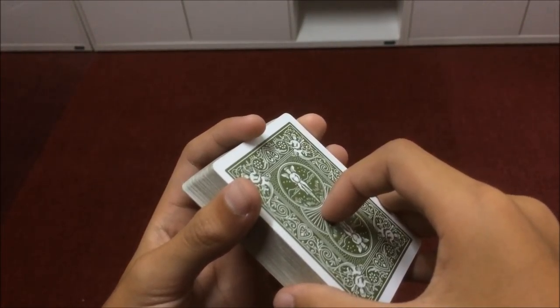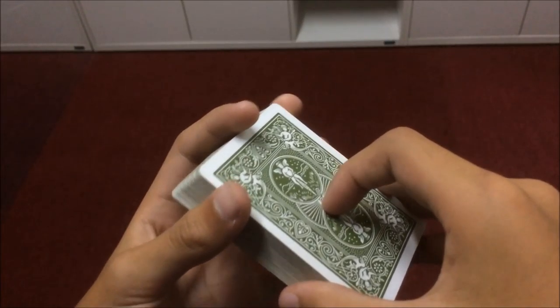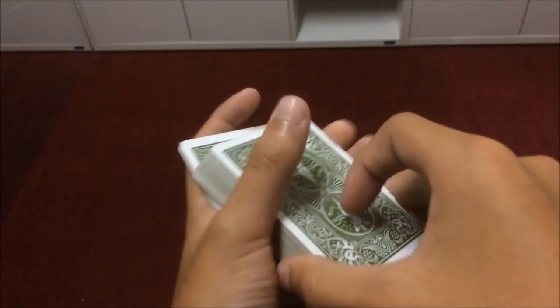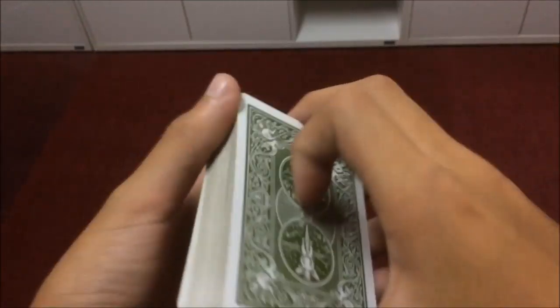Left hand: first finger is at the front of the deck, middle and ring fingers at the right hand side of the deck. Then you pull from the top, just like that.